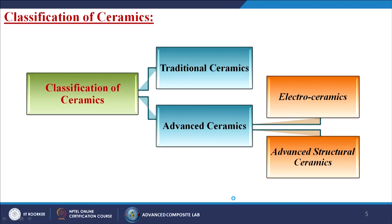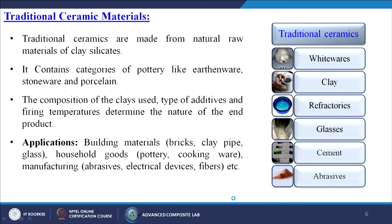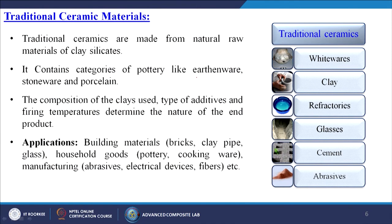The classification of ceramics has two types: traditional ceramics and advanced ceramics. Advanced ceramics are further divided into two sub-categories: electro-ceramics and advanced structural ceramics. Traditional ceramics are made from natural raw materials such as clay or clay silicates obtained from the environment. They include categories of pottery like earthenware, stoneware, and porcelain.